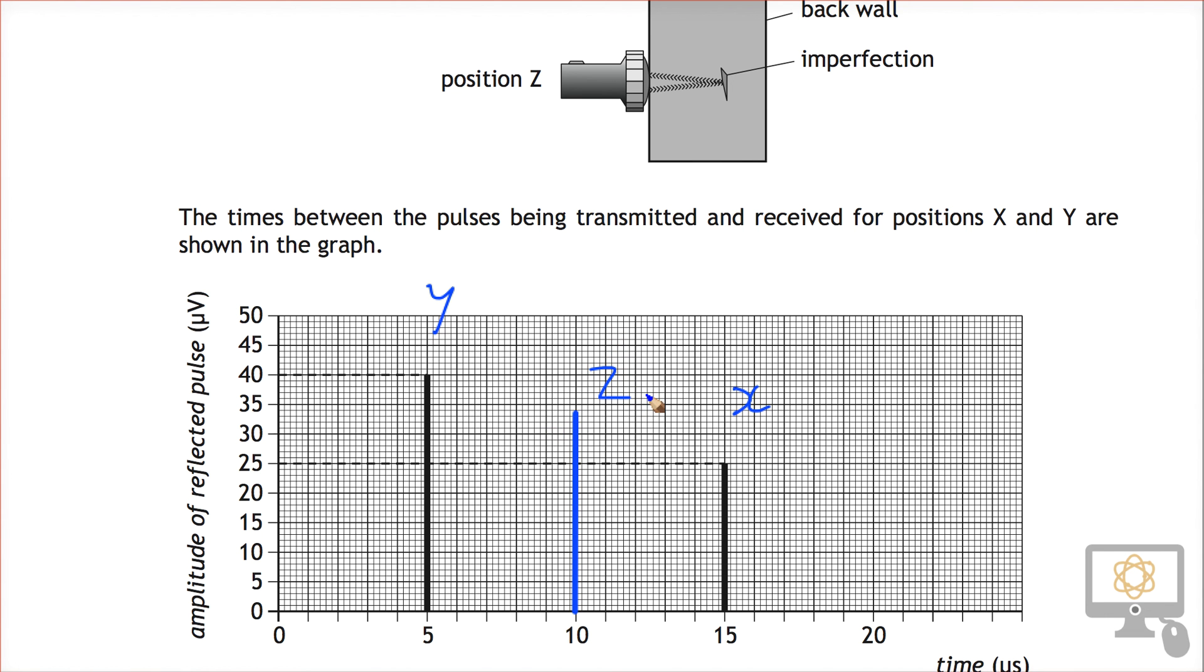Now of course in terms of marking this, we don't know exactly where that is - it could be anywhere between the 5 and the 15, and amplitude wise it could be anywhere above 25 and below 40. And if you do that correctly, you'll get the marks.